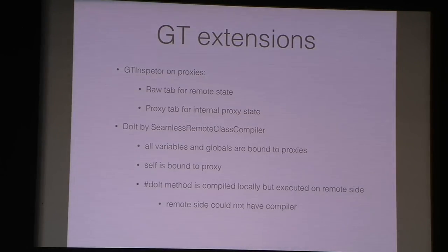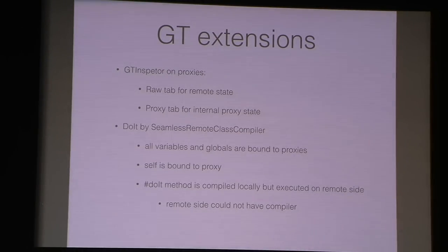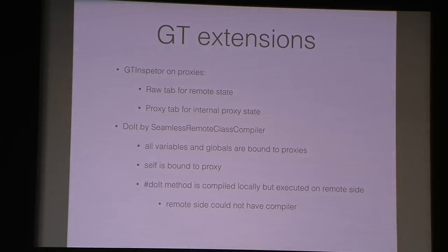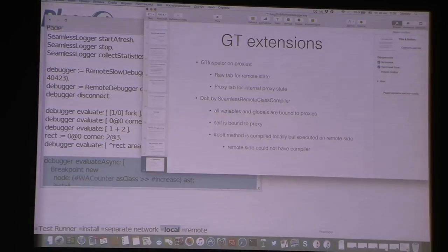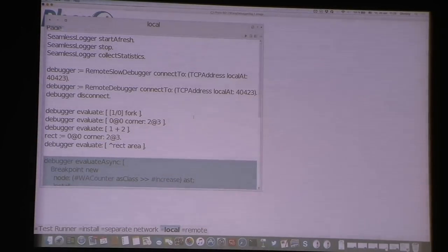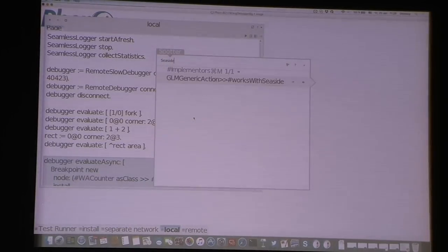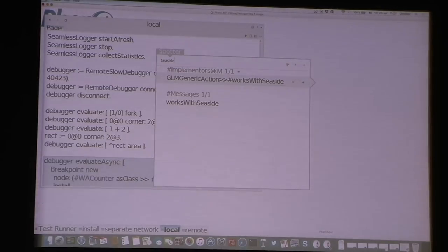One small thing I needed to do on the user interface part was add some GT extensions. Thanks to GT extensions it was very easy to provide this inspector for remote proxies. To implement do-its I needed to provide a special compiler by defining a special class for remote proxies. All do-its are compiled locally, and then the compiled method is transferred to the remote side where it is executed, which means the remote side doesn't need a compiler. Another important thing is that from our tools image we could browse the remote server — we don't need source code for this.